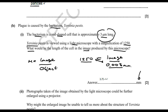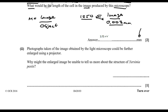Then it goes on: photographs taken of the image obtained by the light microscope could further be enlarged using a projector. Why might the enlarged image be unable to tell us more about the structure of Yersinia pestis? This answer is about the difference between resolution and magnification. You can magnify things as many times as you want, however you won't see any more detail because you haven't changed the resolution.